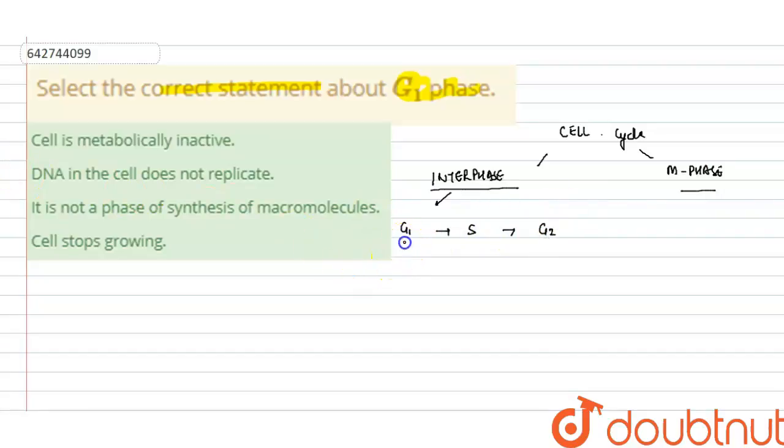Now in G1 phase, what happens? The cell growth occurs and the cell prepares itself for the DNA replication. And all types of ATP molecules or the nucleotides, these are formed in the G1 phase, and the cell is metabolically active during the G1 phase.